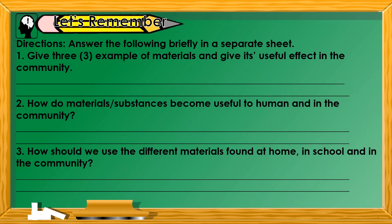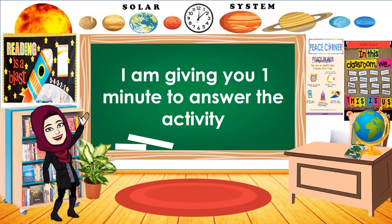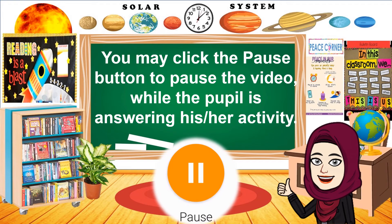Now, let's answer let's remember. Directions: Answer the following briefly in a separate sheet. Number one: give three examples of materials and give their useful effect in the community. Number two: how do materials become useful to people in the community? Number three: how should we use the different materials found at home, in school, and in the community? There are different ways to use these materials, so you need to clarify how you are going to use them. Are you ready? I'm giving you one minute to answer the activity.